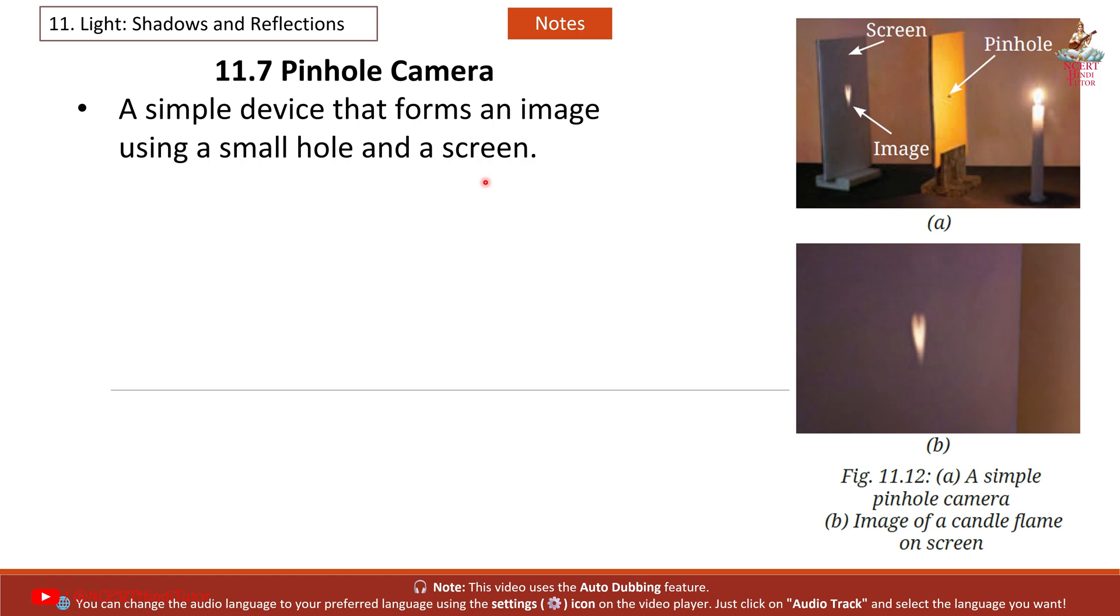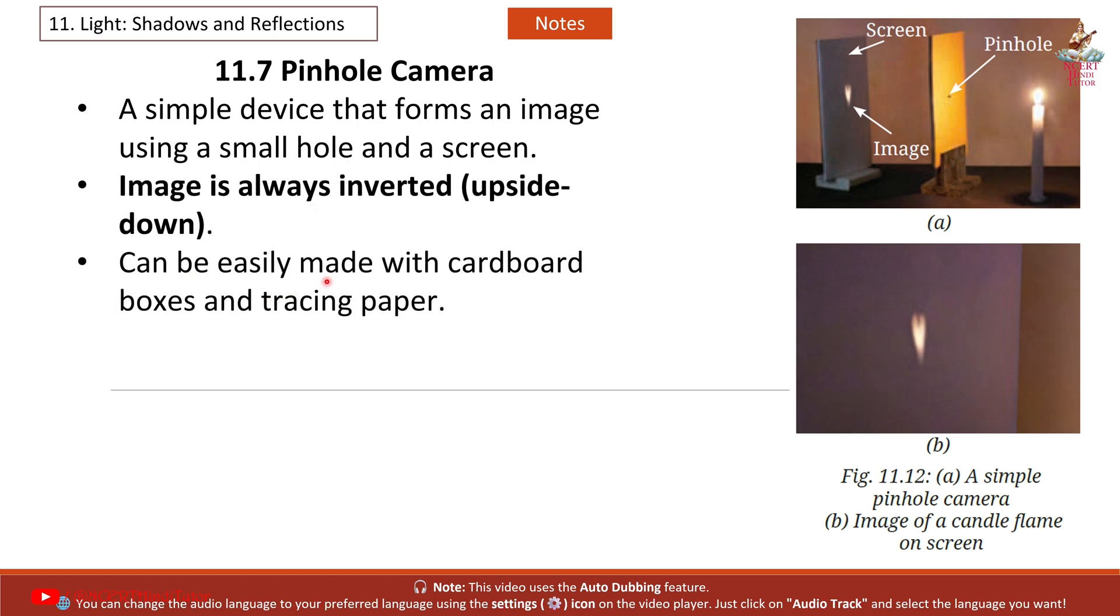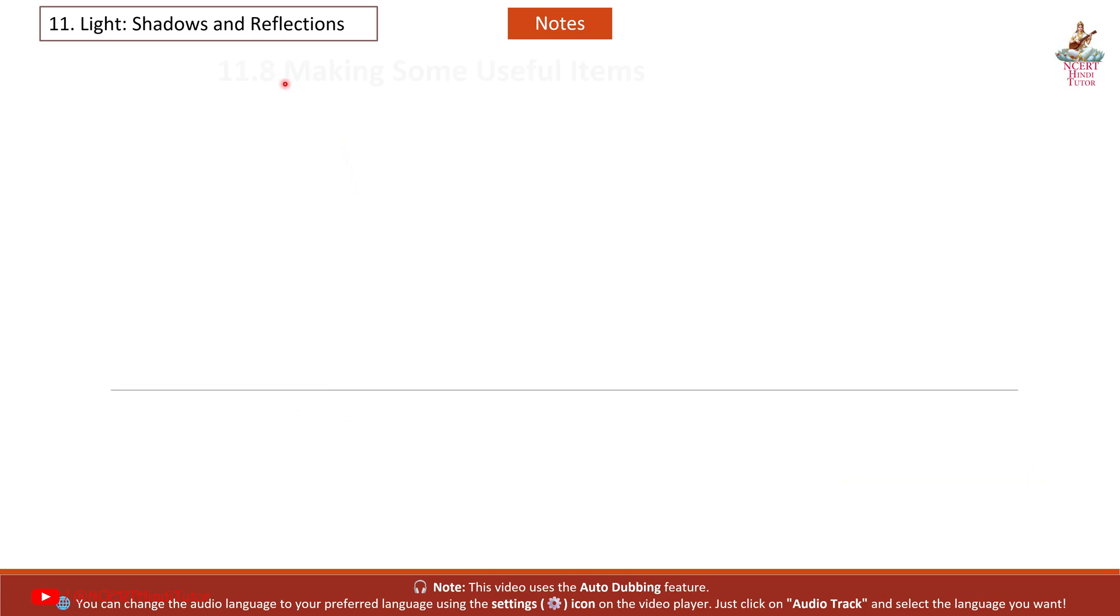11.7 Pinhole camera. A simple device that forms an image using a small hole and a screen. Image is always inverted (upside down), can be easily made with cardboard boxes and tracing paper, works best in bright sunlight and for distant objects.